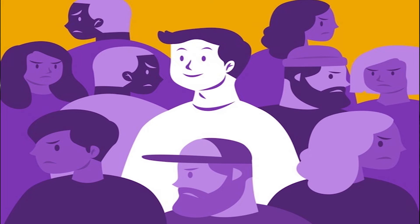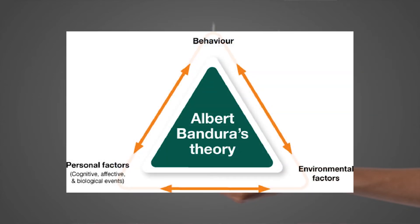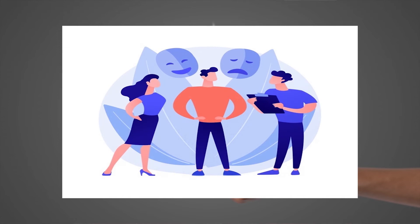A third approach, more used nowadays, is social learning theory. It looks at learning as a result of conditioning — reinforcement and punishment — and brings these theories together to say that behavior is interdependent on environmental factors and personal factors, that these continuously interact and influence each other, and that most behavior is learned through observation, imitation, and modeling.